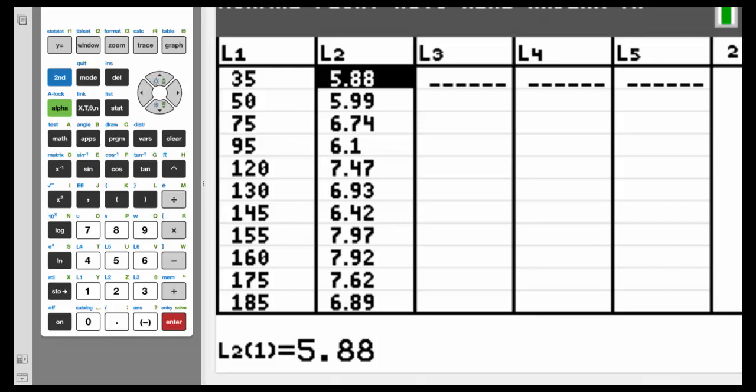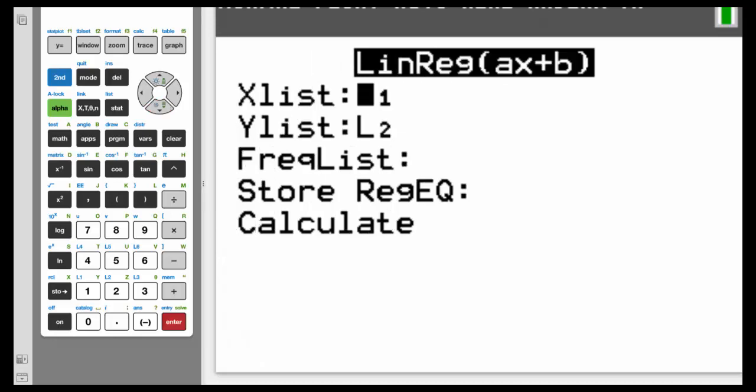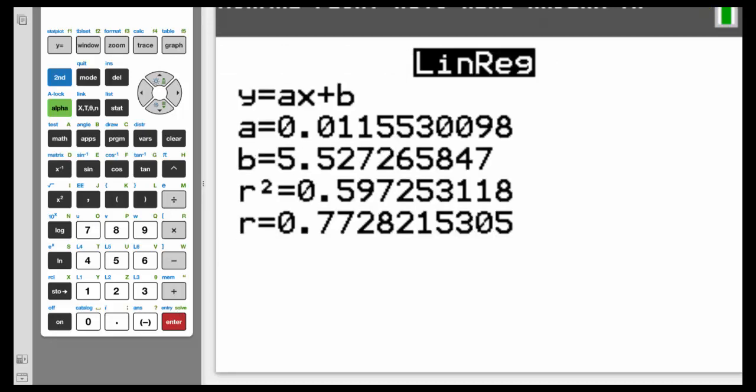So I put in the values. For L1, that's the depth at which drilling begins. And L2 was the time to drill five feet. So how do we find this equation with the calculator? Hit STAT, highlight CALC, go down to number four, which is LINREG AX plus B, hit ENTER. XLIST is L1, YLIST is L2, highlight CALCULATE, and hit ENTER.